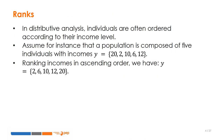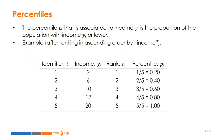In what follows, we introduce the main concepts that are used extensively in the distributive analysis of wellbeing. In distributive analysis, individuals are often ordered according to their income level. For instance, the rank of the person with an income equal to 12 is 4. The percentile associated with a given income is simply the proportion of the population disposing of this level of income or lower.